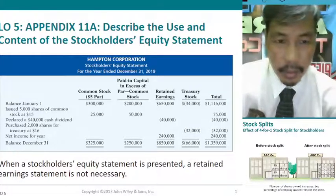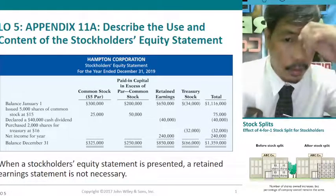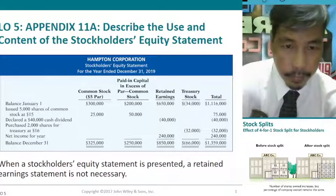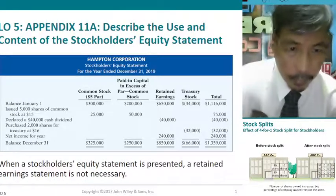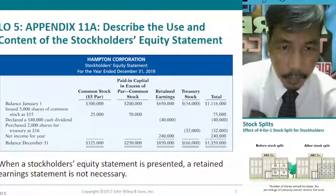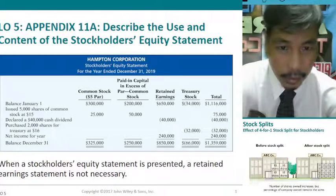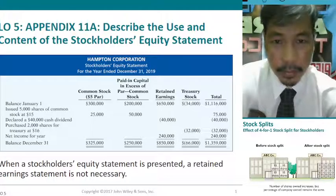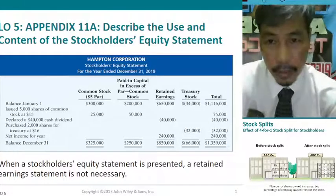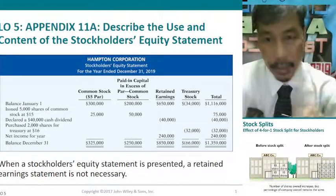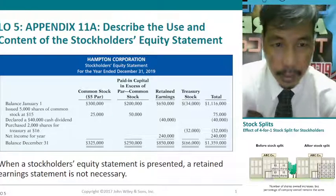Treasury stock entries are both shown with parentheses, so they are negative. Net income for the year is added to retained earnings — you add or subtract depending on the transaction. Then we have the ending balance as of December 31, representing the close of the accounting period. Take a look and familiarize yourself with the layout.